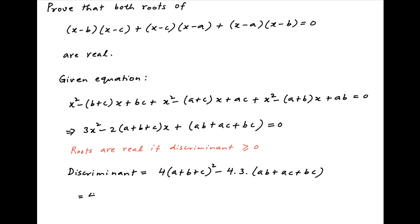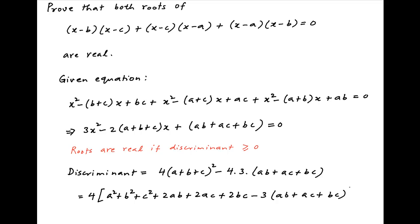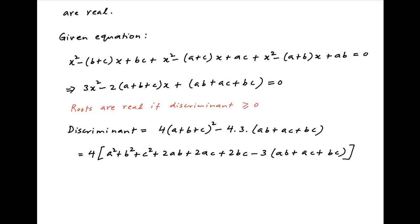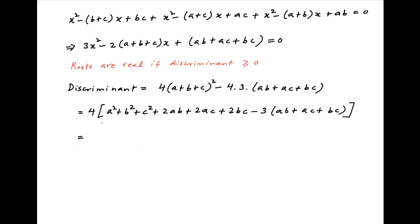This is equal to 4 times (a squared plus b squared plus c squared plus 2ab plus 2ac plus 2bc minus 3 times (ab plus ac plus bc)), which simplifies to 4 times (a squared plus b squared plus c squared minus ab minus ac minus bc).